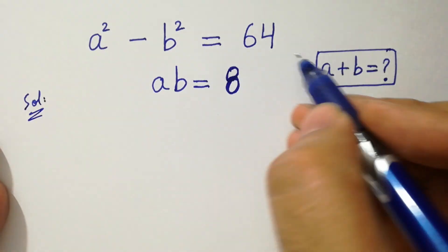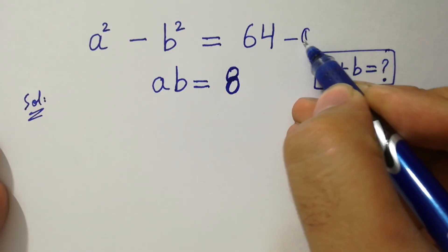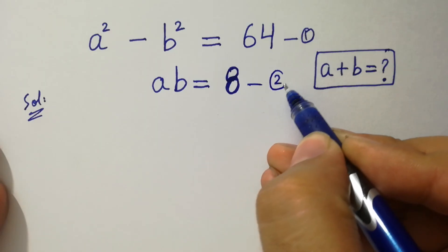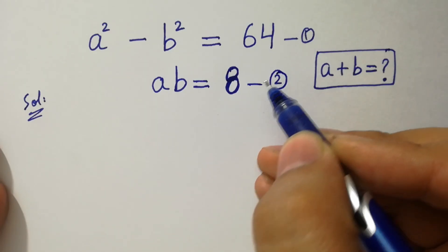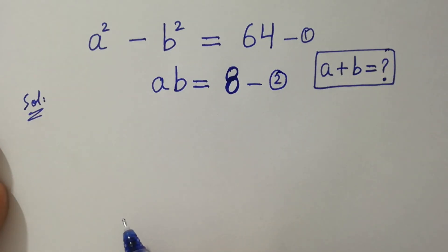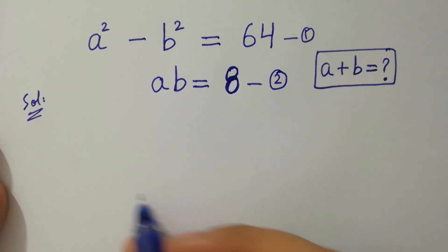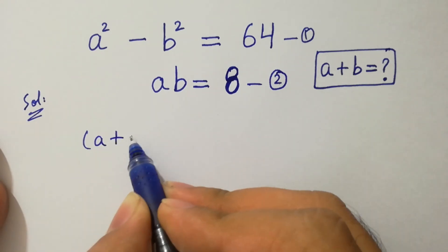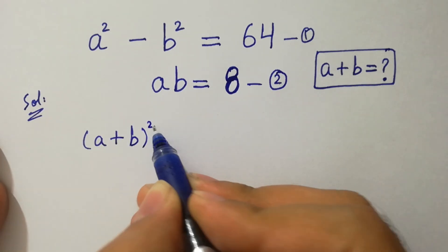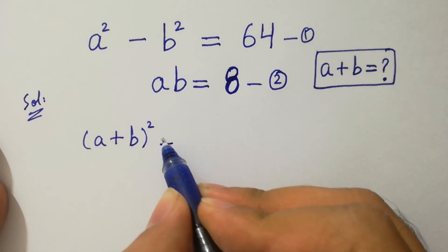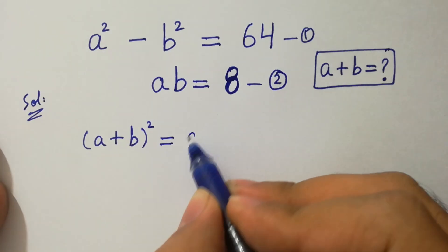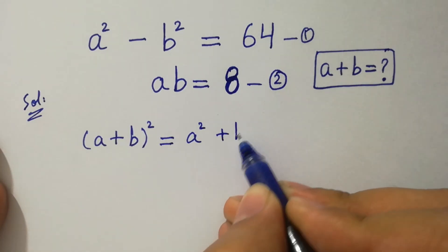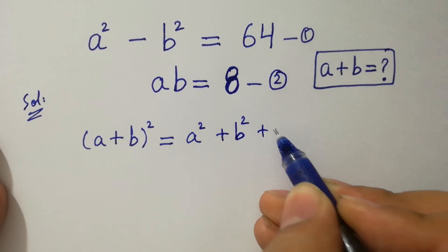Say this is the first equation and this is the second equation. We know the formula of a plus b whole squared, which is equal to a squared plus b squared plus 2ab. Say this is the third equation.